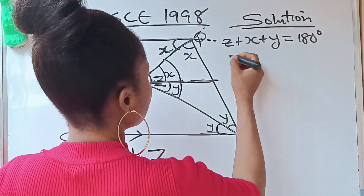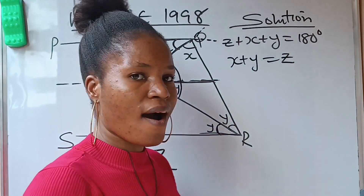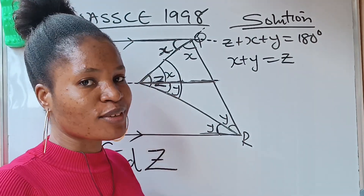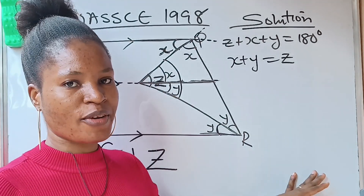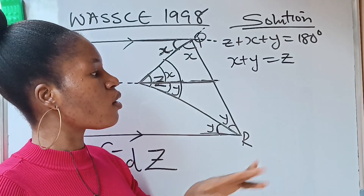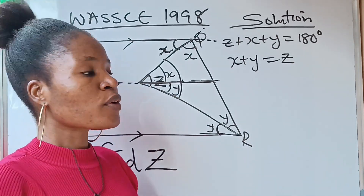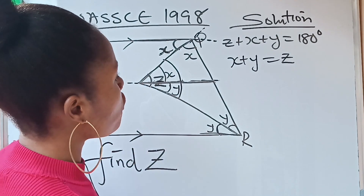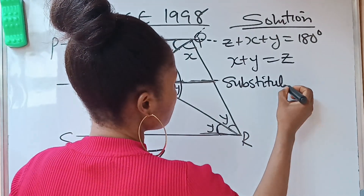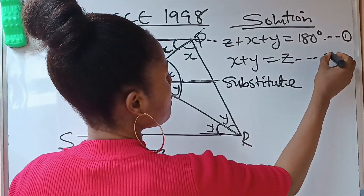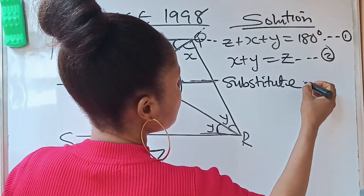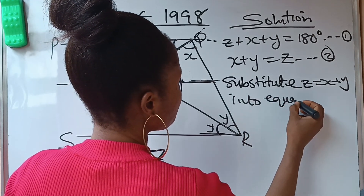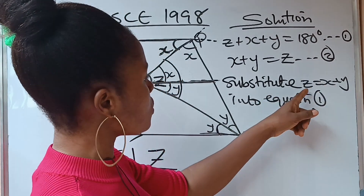So our second equation is: x plus y equals z. If you have followed me to this stage, please hit the subscription button and the notification bell so you're notified whenever I upload a new video. Now we have two equations — let's call the first one equation one and the second equation two — and we will substitute.